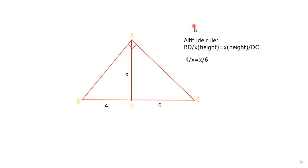Now if we just plug in the values and substitute, we get 4 over x equals x over 6, which simplifies to x equals the square root of 24. When we plug this into our calculator and round to the nearest hundredth, we get 4.9.